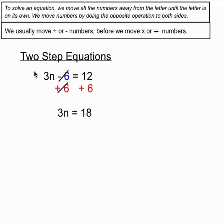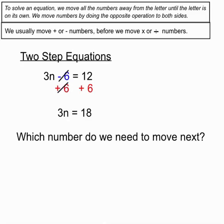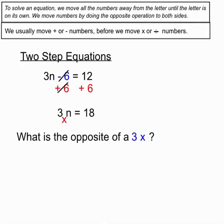So this is a two-step equation. That's the first step. We've moved one of the numbers away from the letter. Now we've got to move the next number. There's only one number annoying the letter at the moment now, and that's the 3. We consider that 3 to be multiplying by the n because they're sitting beside each other. There's an invisible multiply between the 3 and the n.